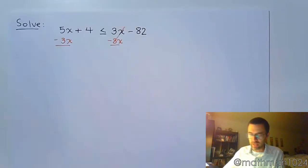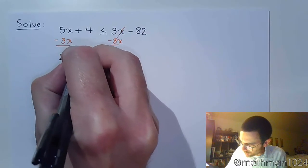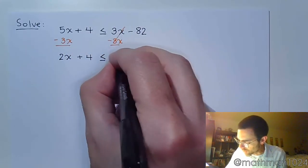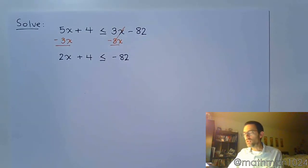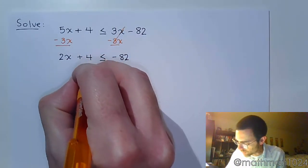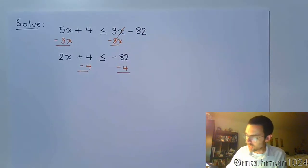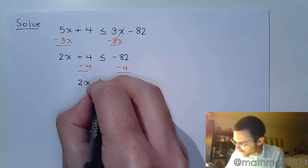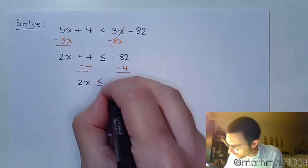Now remember, subtracting does not change your inequality, so it's going to stay just as it is. We combine these guys: that's 2x plus 4, still less than or equal to negative 82. So we got all the variables to the left, time to move the constants to the right. When I subtract 4, we have 2x, this is still less than or equal to because I'm just subtracting, not dividing.